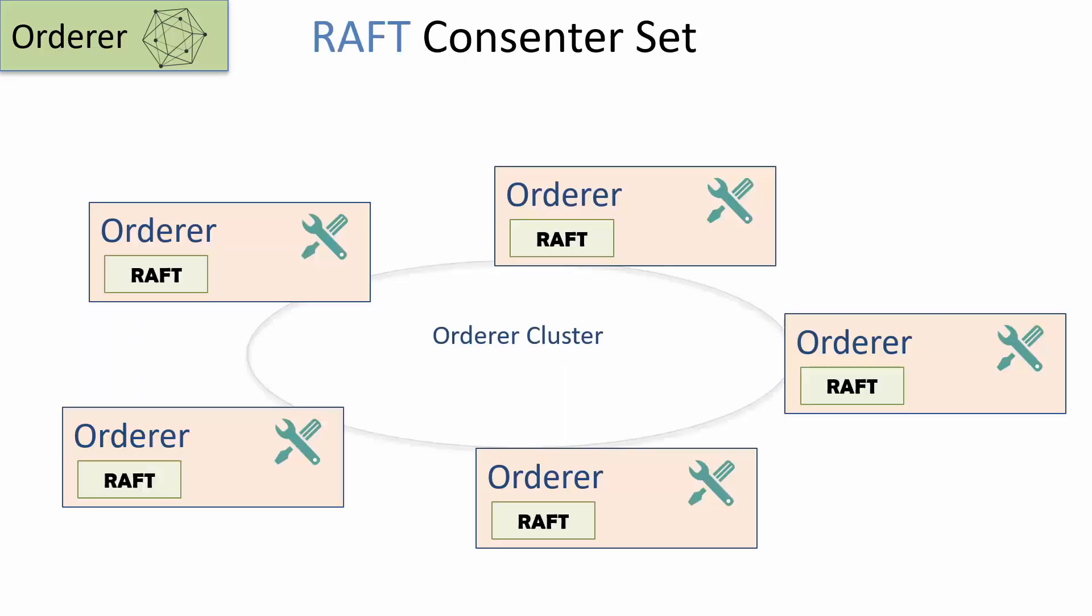The log entries in the log has the fabric transactions that act on the data managed in the fabric network. The raft cluster for fabric network requires three or more orderer instances to be set up. The raft nodes within the orderer instances communicate with other instances in the network by way of TLS enabled gRPC protocol.